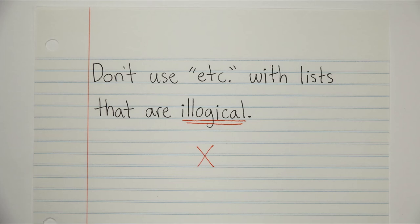most of the time with lists like that, it's going to be pretty easy to assume what's coming next, to assume what's being left out of the list. And that's when we can use etc. because we can assume or infer what's coming next. But that's not always the case.